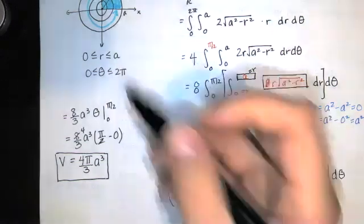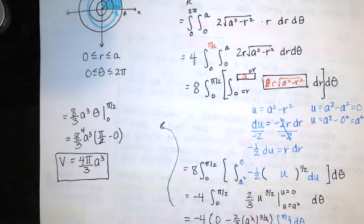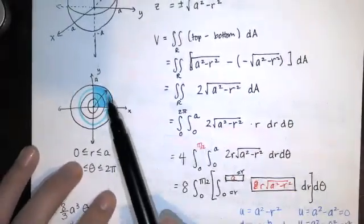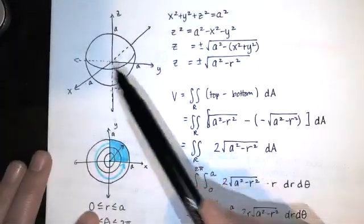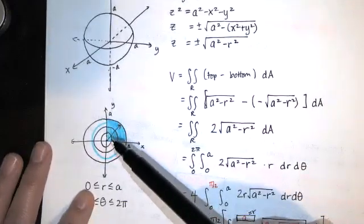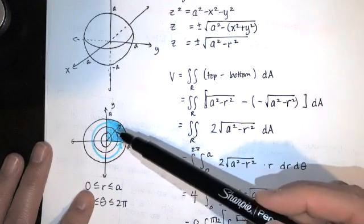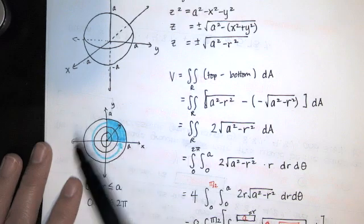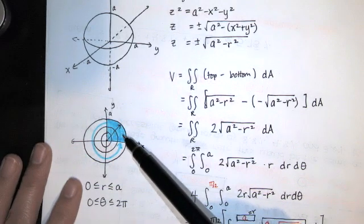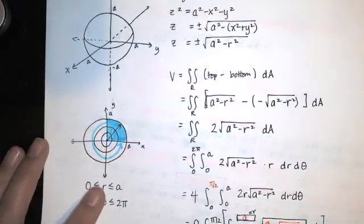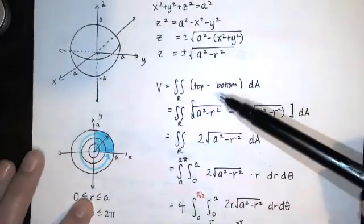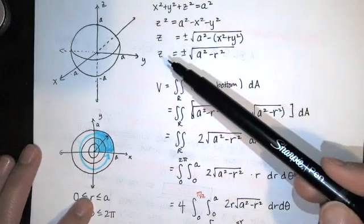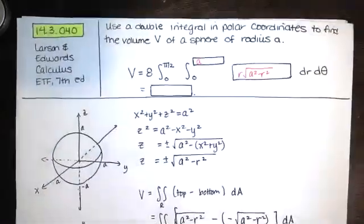We're just using A here instead of R because R is reserved for polar coordinates. The volume between the top and bottom surfaces in the first octant pair is the same as the volume in each of the other quadrant sections — that's where the factor of 4 comes from, and the 2 came from subtracting the bottom function from the top. I hope that helps — please let me know if you have any questions.